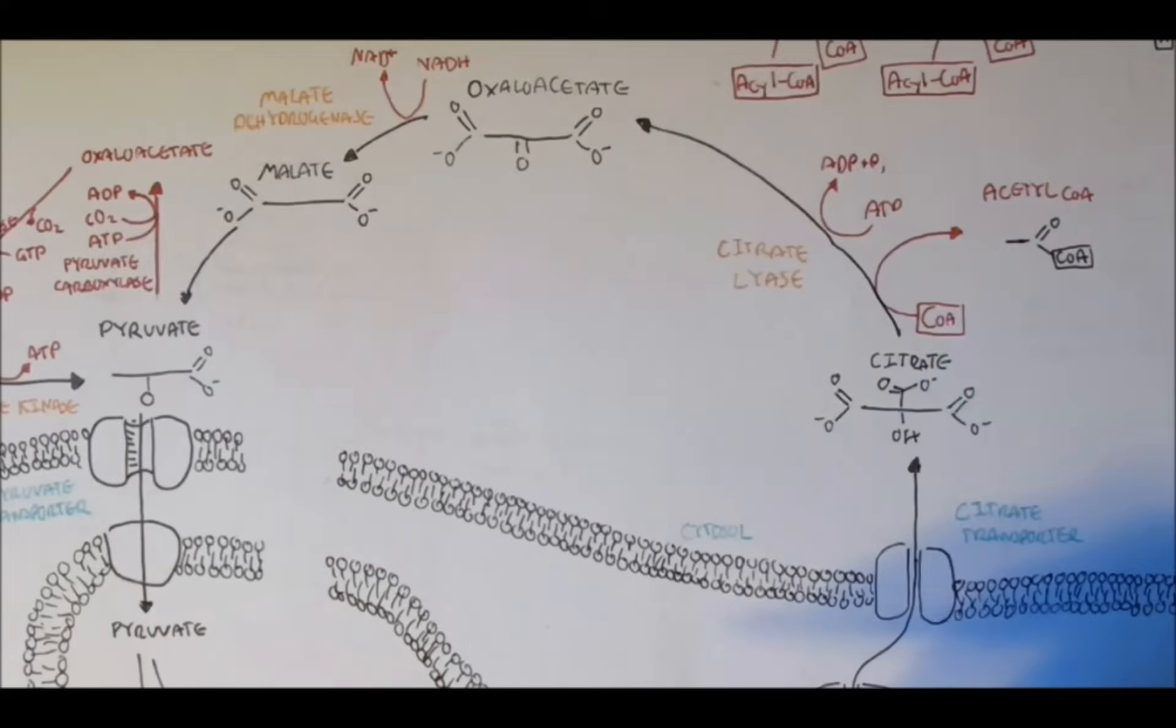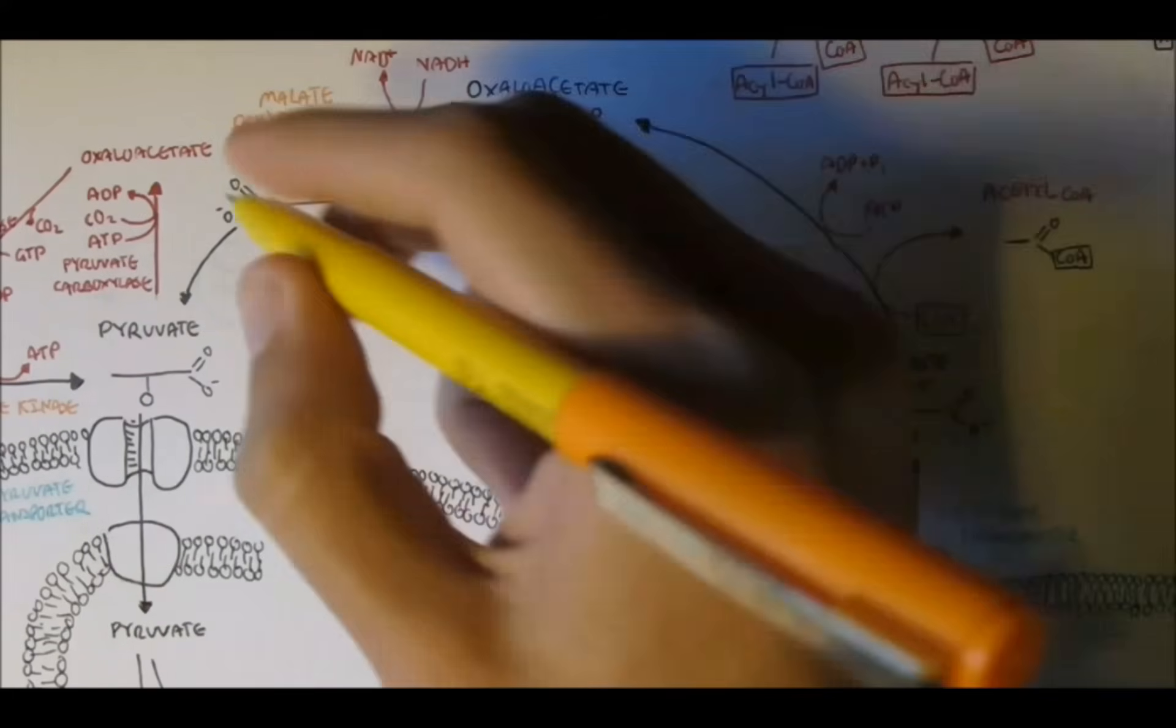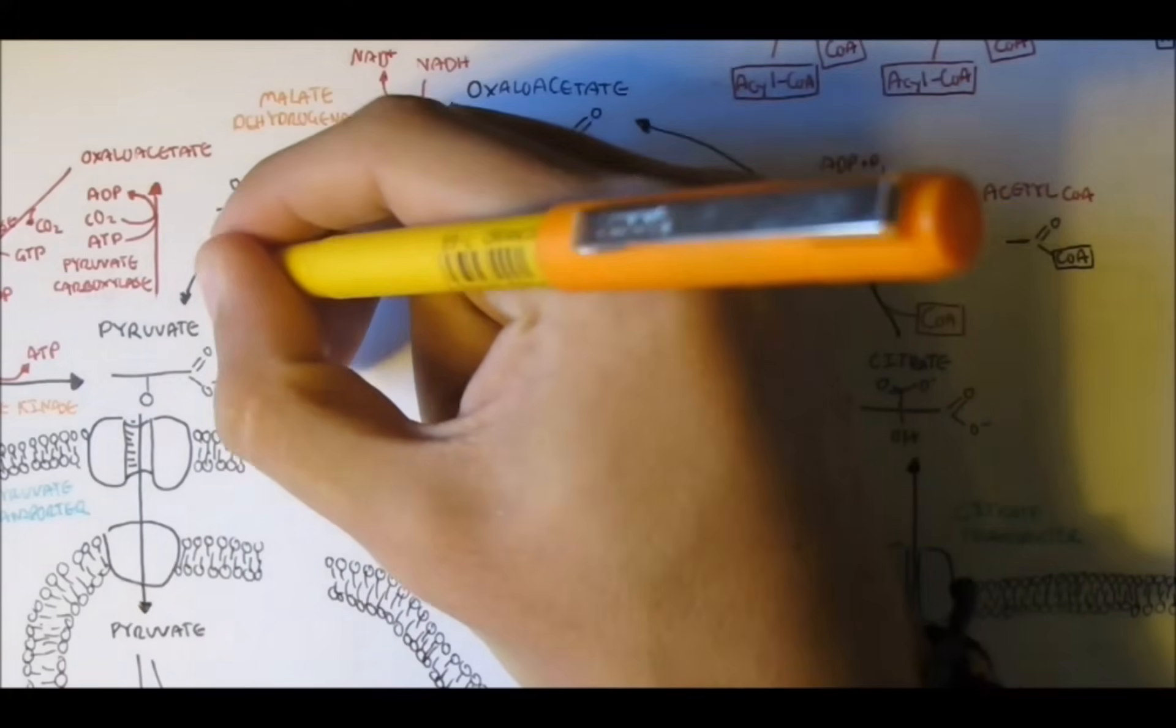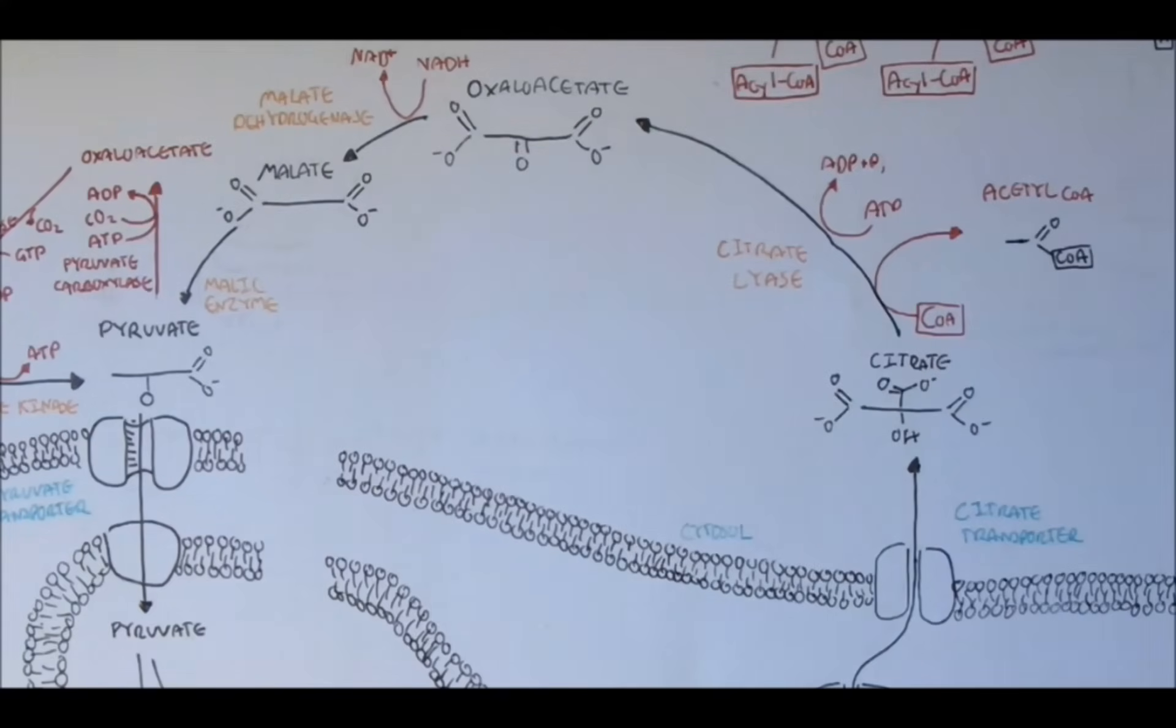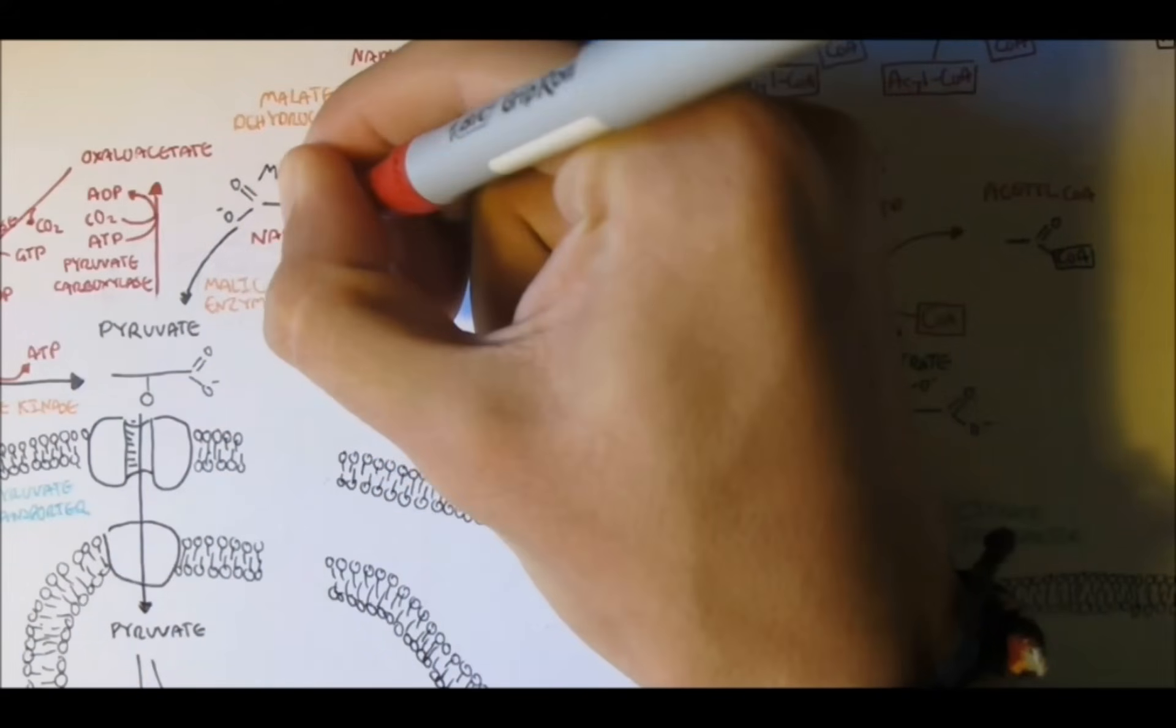Now then, malate can then be oxidized back to pyruvate by the malate enzyme through a condensation reaction by removing a carbon dioxide group.